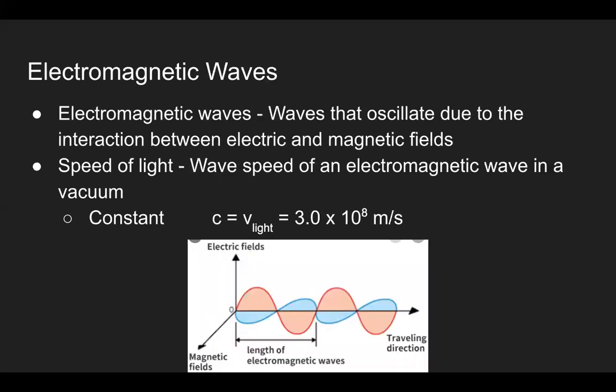The other type of wave is the electromagnetic wave. Although electricity and magnetism is not emphasized until Physics 40C, electromagnetic waves are basically waves that oscillate due to the interaction between electric and magnetic fields. One important constant to remember is the speed of light. The speed of light is the wave speed of an electromagnetic wave completely sealed in a vacuum. It has a value of 3 × 10⁸ meters per second.